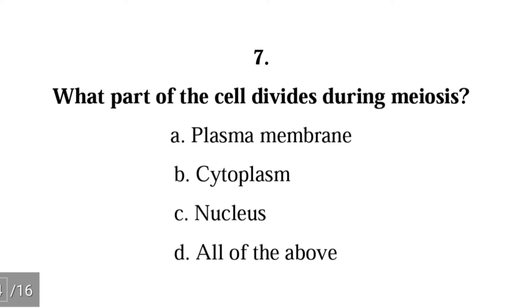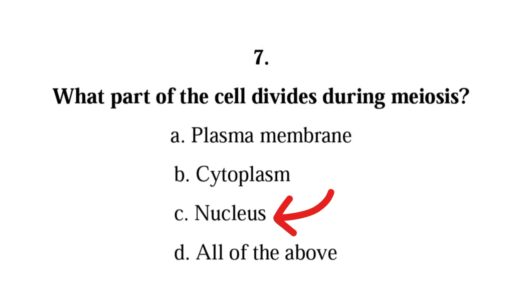Question 7: What part of the cell divides during meiosis? A. plasma membrane, B. cytoplasm, C. nucleus, D. all of the above. The correct answer is C, nucleus. Meiosis is simply the division of the nucleus.